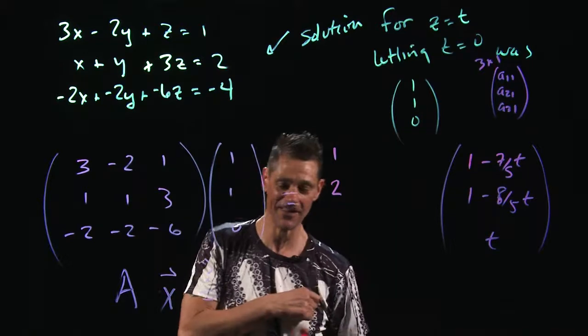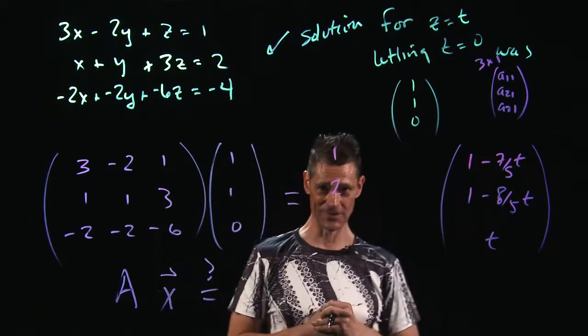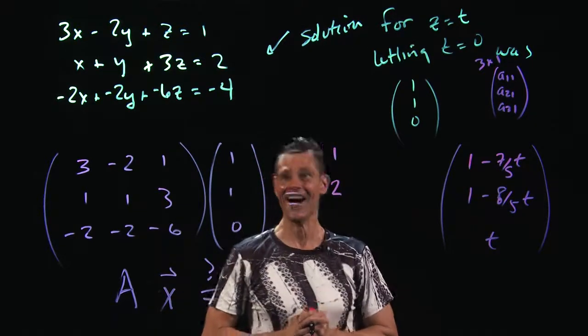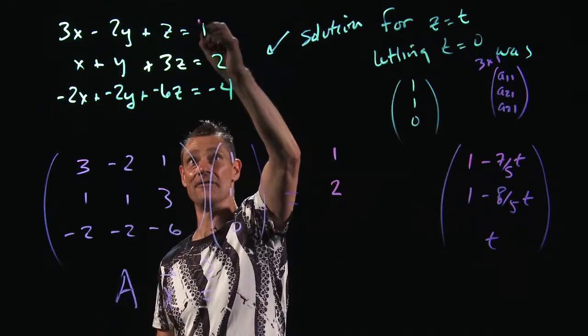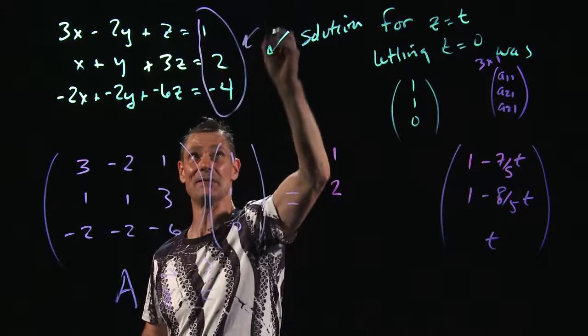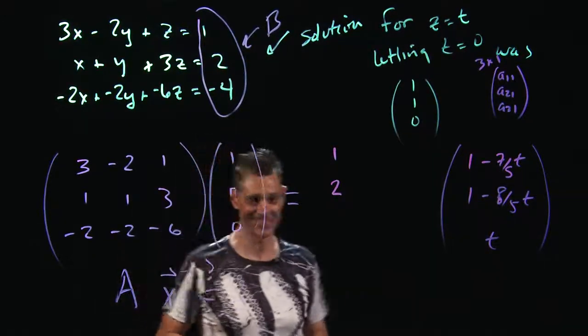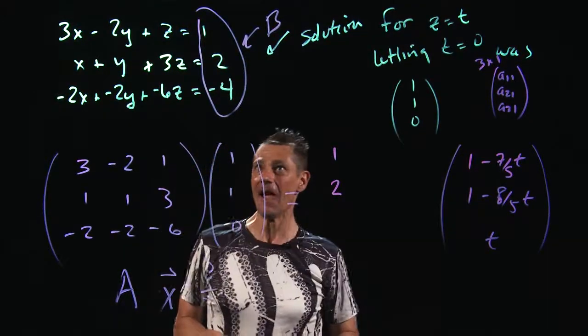You know what? I almost said something that was going to make us have to reshoot. Let's compute this again, and I'm glad I didn't. That's right. Remember what we're trying to make it equal. We're trying to see if it, in fact, equals this, which is B. Oh, sometimes that can be good. Okay...